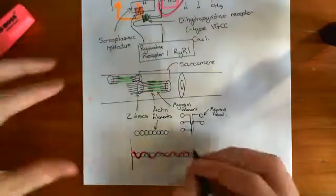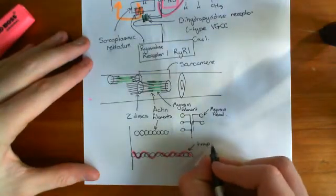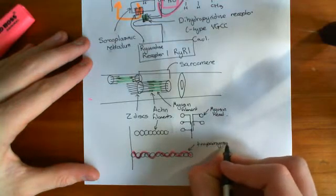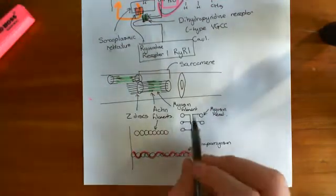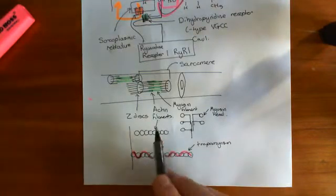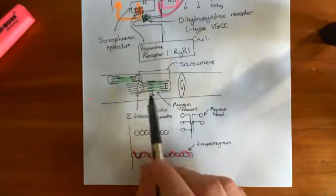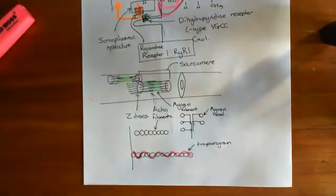This molecule is tropomyosin. When tropomyosin is in place, myosin cannot interact with the actin filaments, so you cannot possibly have myosin pulling the actin filaments towards one another and producing contraction of the sarcomere.